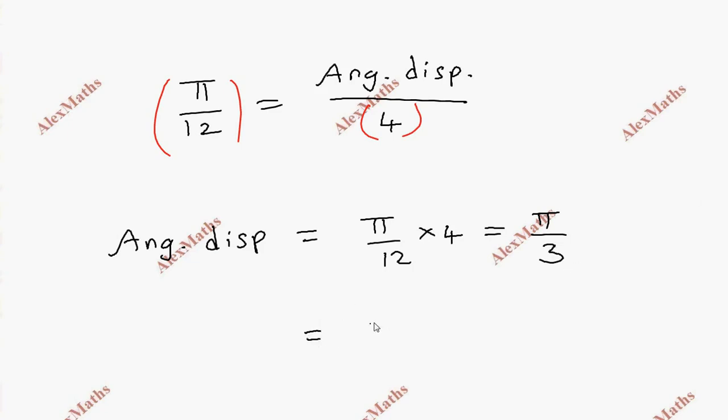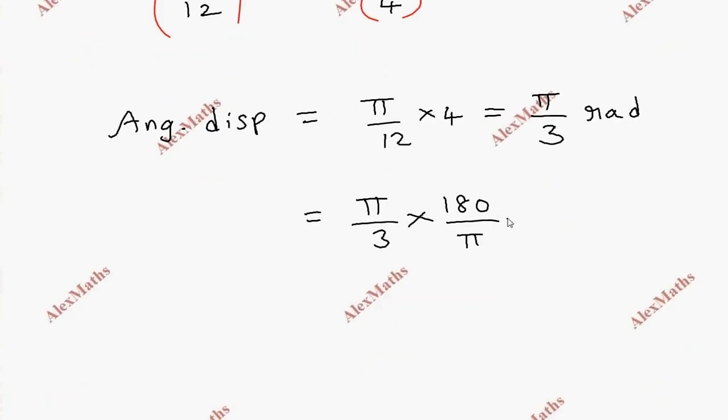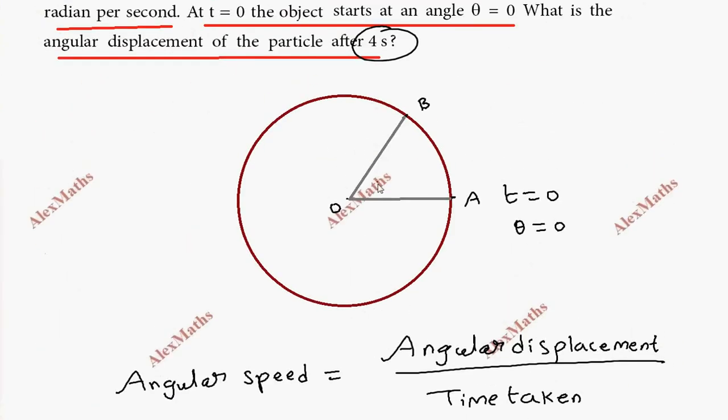So if we convert to degrees, π/3 equals π/3 times 180/π. Cancel π, 180 by 3 is 60 degrees. So 60 degrees is the angular displacement.